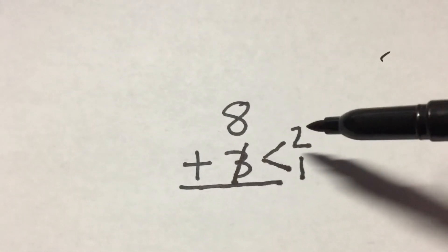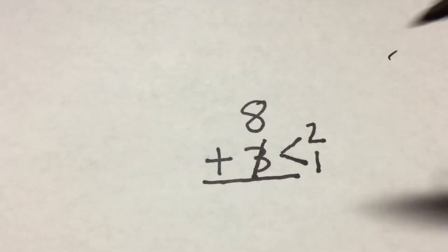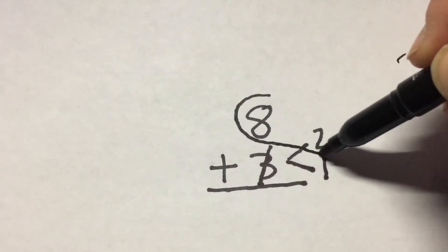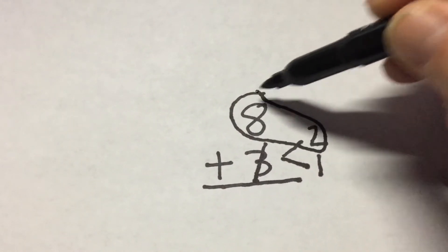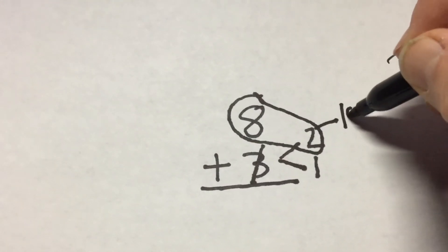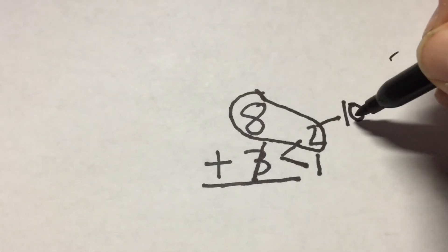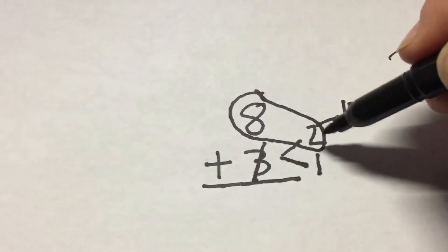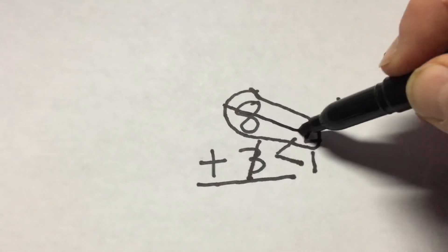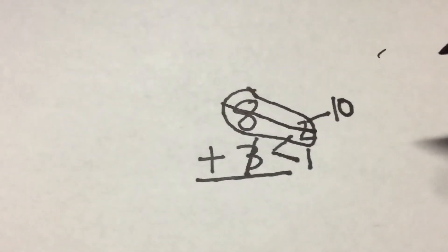So now we have an eight, a two, and a one. So now we're going to combine that eight and the two: eight, nine, ten. So we're going to try to make that friendly ten anytime we can do it. We're going to make that friendly ten. Now we've used that eight and the two, we stuck them together, we composed them. So we're going to draw a simple line through there.